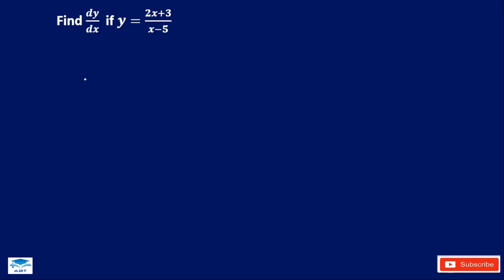If you want to differentiate a function in the form of a ratio of two differentiable functions, then you can use the quotient rule.